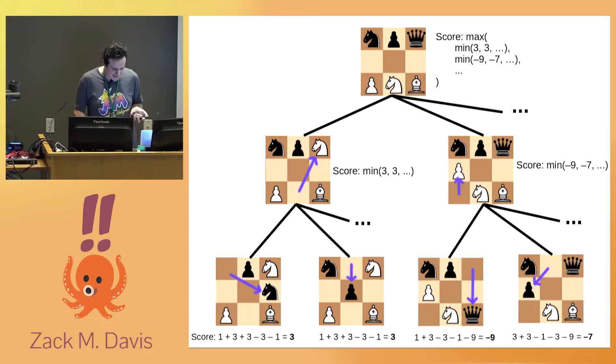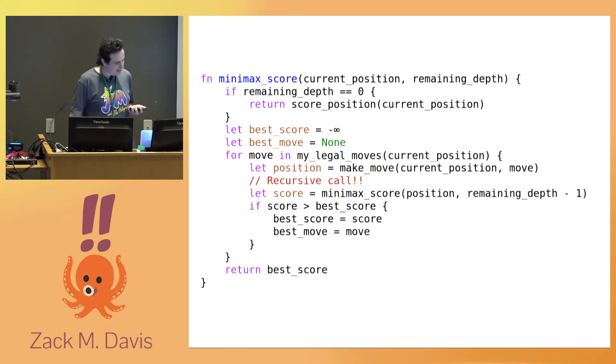And the way you compute that is by asking, well, what would I do if I were in that position except trying to minimize the score rather than maximizing it? And so on recursively. So instead of just choosing the move with the best immediate consequences, we want to look at the entire game tree of my best move, given her best move, given my best move, all the way down to some given depth, which we specify in advance, some given depth at which we give up, take the point count at face value, and then sort of propagate that information back up the call stack. So that's how you play chess.